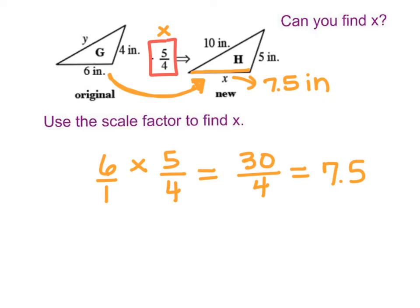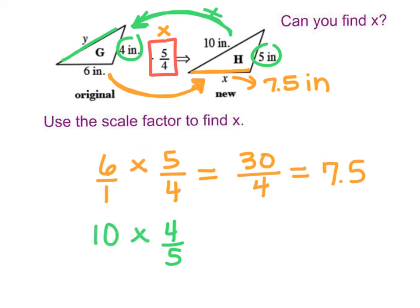Now I want to find y by working backwards — going from the bigger shape back to the smaller one. So my scale factor reverses to 4/5. I want to know 10 times 4/5. Putting a 1 under the 10: 10 times 4 is 40, over 1 times 5, which is 5. 40 divided by 5 is 8. So this side y equals 8.